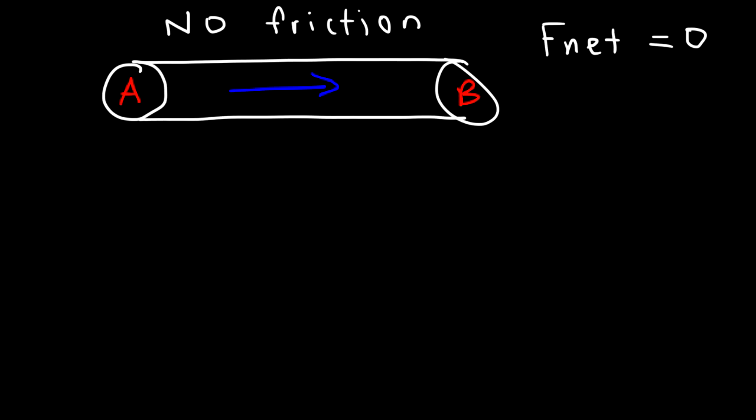Pressure is force divided by area. So the pressure at point A, if it's 100,000 Pa, and if the pressure at point B is the same, then the fluid will continue to flow at constant speed if there's no friction. Now, in real life situations, we know there's some level of internal friction. And so in order for the fluid to travel at constant speed, there must be some sort of pressure difference. And that situation is described by Poiseuille's law.